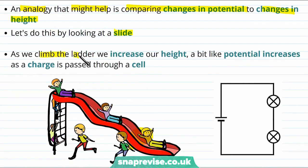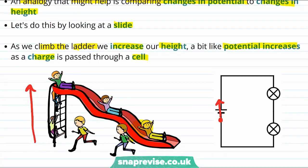As we climb a ladder we increase our height in the same way the potential increases as a charge is passed through a cell. So on the right hand side we imagine a charge which passes through a cell. And in our slide analogy this is the same as climbing up the ladder. Something we might ask is in the context of this slide, what did climbing the ladder really do for us?